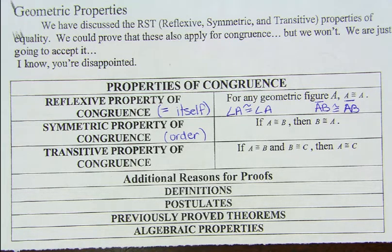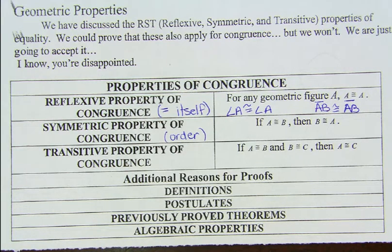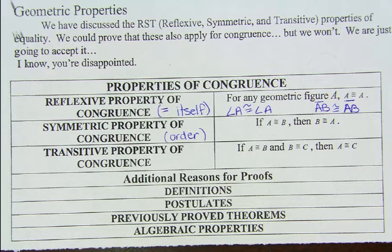Other reasons that we can use for proofs: when we start writing proofs, for every statement that you write down, you need a reason. Some of these properties are reasons for proofs — you could say something is true because of the reflexive property, the transitive property, or the symmetric property. Other reasons you can give are definitions, like the definition of midpoint. You can also use algebraic properties, postulates, or theorems.